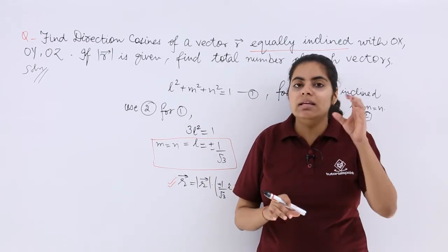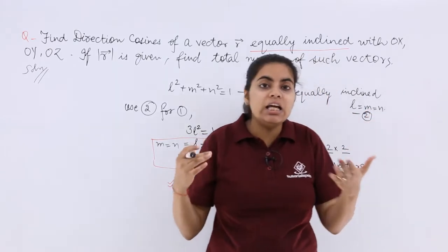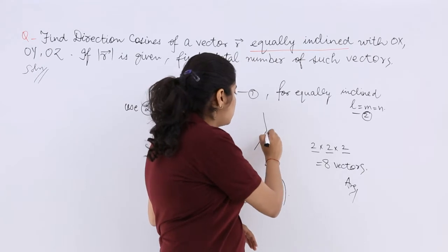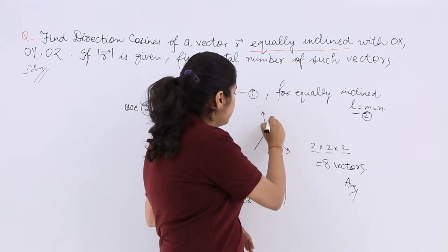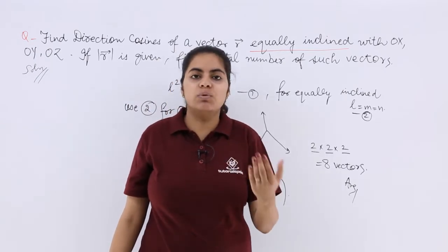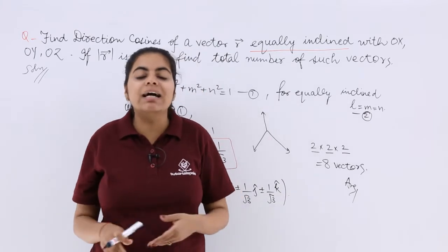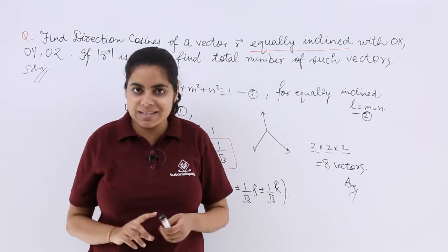So that means the L, M, N, when you say that equal inclination is there - this is your x, y, z plane suppose - equal inclination of a vector means cos α is equal to cos β is equal to cos γ, where α, β, γ are the angles made with the respective axes.